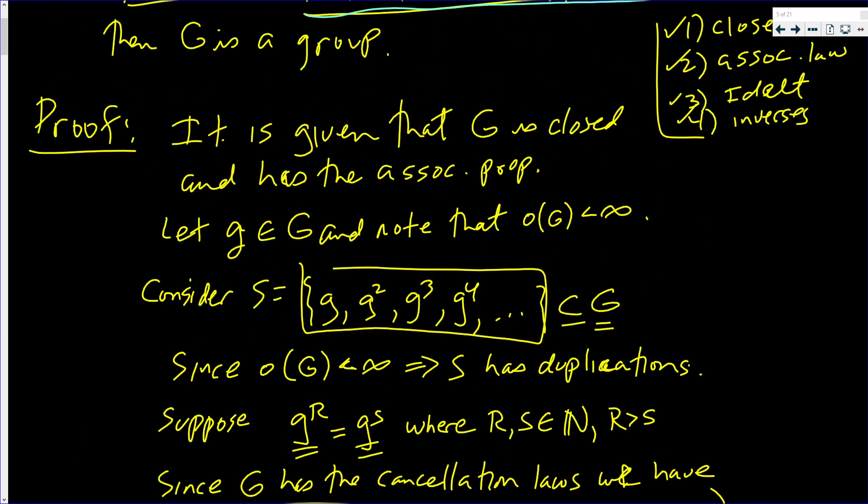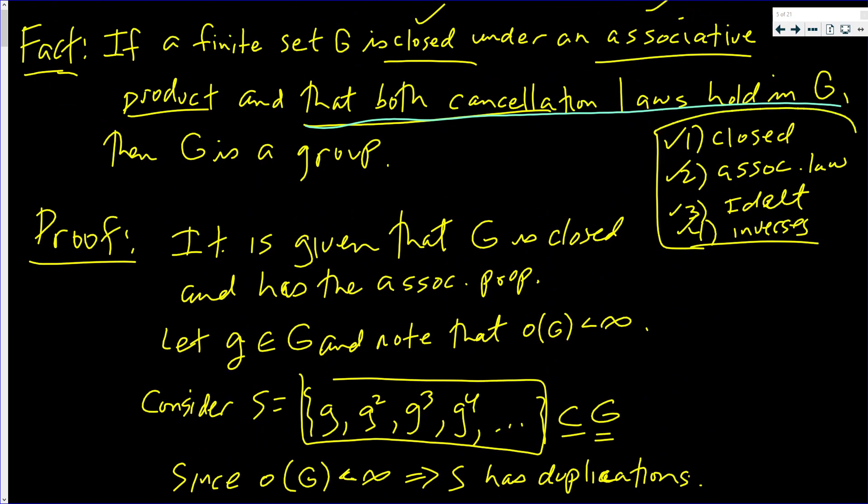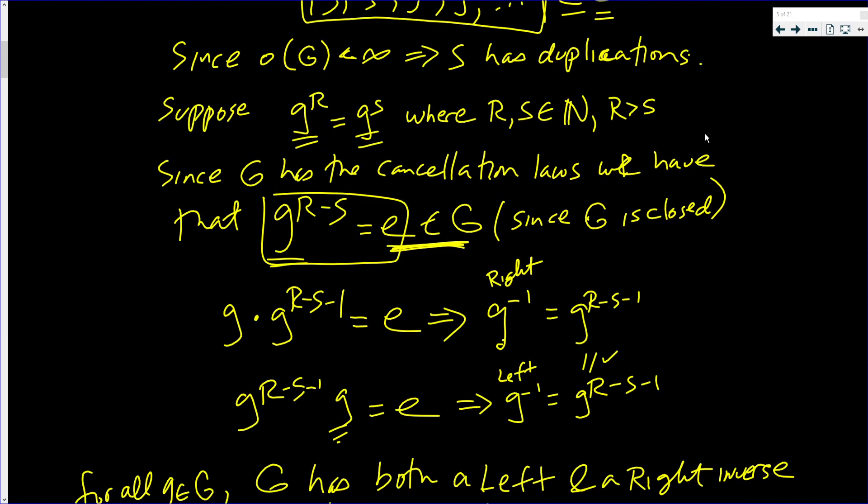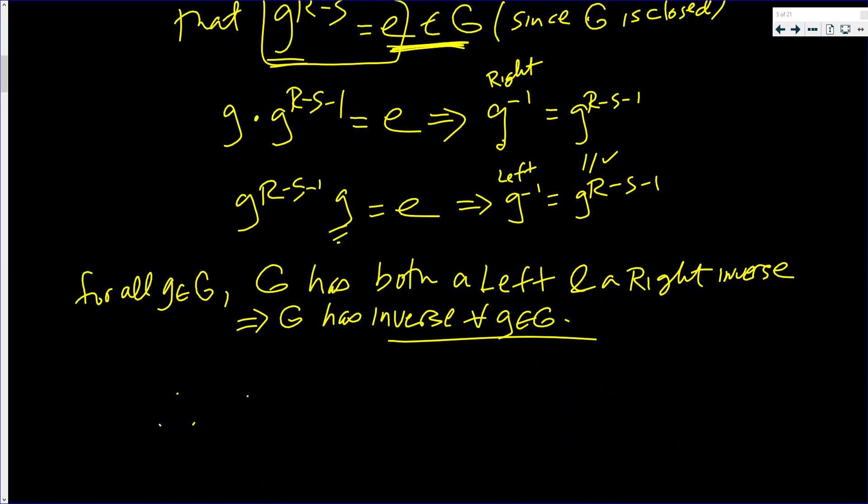Let's go to our checklist. I checked off all four. G is a group. Therefore, G is a group. If you have closure and associative law, along with both cancellation laws, you got yourself a group.